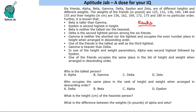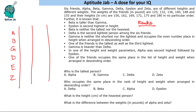So let us fill this information. We have six people: Alpha, Beta, Gamma, Delta, Epsilon, and Zeta. They have different weight and different height, and we shall fill their ranks. We will assign rank 1 as the highest and rank 6 as the lowest.